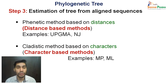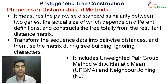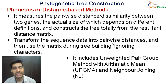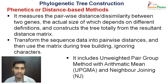Now let us see how we use these methods to construct the phylogenetic trees. The first method, also called as phenetic or distance-based methods, measures the pairwise distance or dissimilarity between two genes. The actual size depends on different definitions, and constructs the tree totally from the resultant distance matrix. That means it transforms the sequence data into pairwise distances, then uses the matrix during tree building, ignoring the characters.